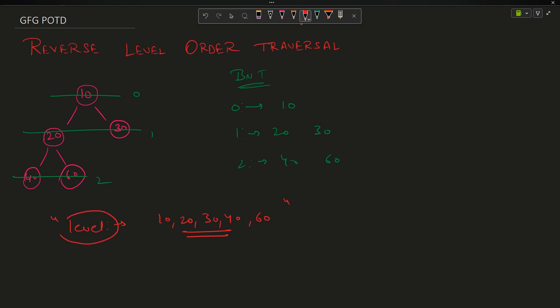Now the question demands us to reverse the order. That is, reverse this order. Instead of 10 at first, 20, 30 at second, and 40, 60 at third, it should be 40, 60 first, this should be second, and this should be third. That is my order should be 40, 60, 20, 30, 10. That is level 2 first, then level 1, and at last level 0, that is moving upward instead of downwards.